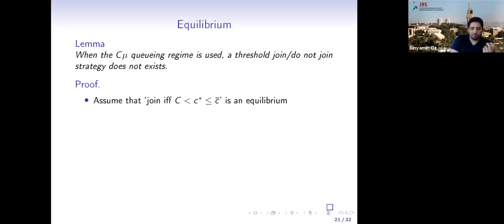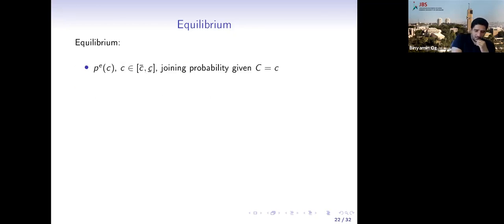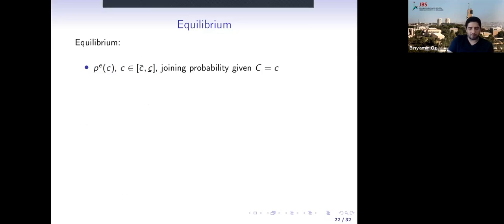Without going through the full proof: assuming any threshold and checking for beneficial deviations shows it is not an equilibrium. The most general strategy is a joining probability function p(c) that maps each cost value c to a probability of joining. We call this function p(c).